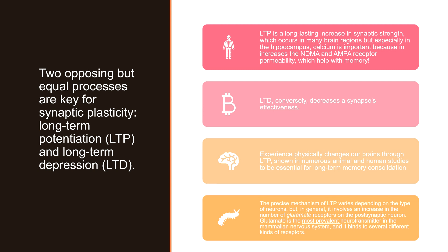There are two opposing but equal processes key for synaptic plasticity — LTP (long-term potentiation) and LTD (long-term depression). Don't confuse LTD with emotional depression, though it could contribute to something like that. Long-term depression basically means the reduced effects of the neurotransmitter on the neurons, rendering the signal weak or essentially useless. Whereas long-term potentiation increases the signal. Calcium and glutamate are both essential here. Glutamate is actually the most prevalent neurotransmitter in the mammalian nervous system and binds to several different kinds of receptors.